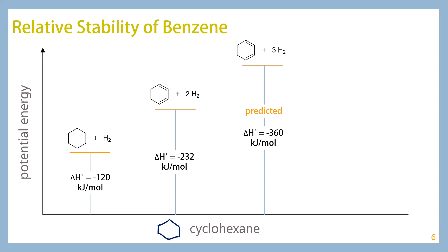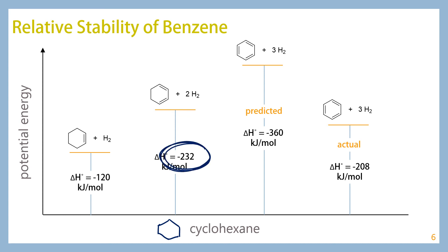What we'd expect is 360 kJ/mol, but what we actually see is much less than that — actually less than the energy released from cyclohexadiene. The reason for this difference is that benzene is so stable and very hesitant to give up its first double bond, so this is much less exothermic than expected. The hydrogenation of benzene requires so much more energy input that less energy actually ends up being released by the reaction.